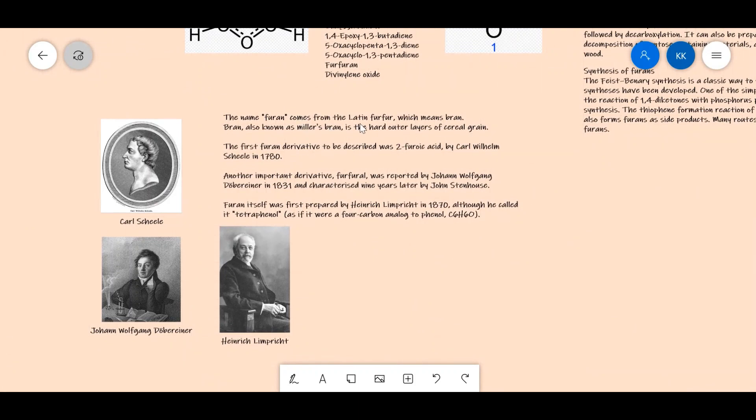The name Furan comes from the Latin furfur, which means bran. Bran, also known as miller's bran, is the hard outer layer of cereal grain. The first furan derivative to be described was 2-furoic acid by Carl Wilhelm Scheele in 1780.